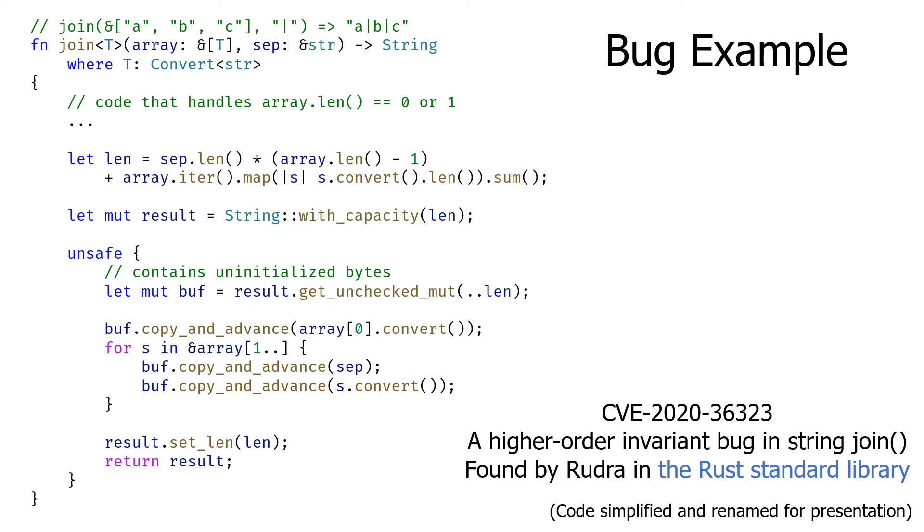Let me explain the bug with a code example. This function takes an array of types that can be converted to a string as the first parameter and a separator string as the second parameter. For instance, if ABC is given as an array and the pipe is given as a separator, it returns a string that contains A pipe B pipe C. It first calculates the result length. Note that the original code has an overflow check, which is not represented in the slide.